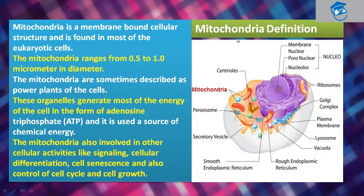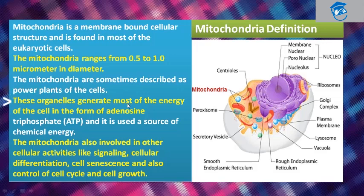Mitochondria is a membrane-bound cellular structure found in most eukaryotes, ranging from 0.5 to 1 micrometer in diameter. The mitochondria are sometimes described as power plants of the cell, also called powerhouse of the cell. These organelles generate most of the energy of the cell in the form of adenosine triphosphate — ATP — which is used as a source of chemical energy.